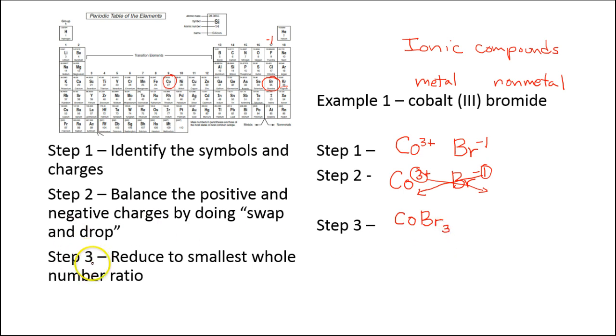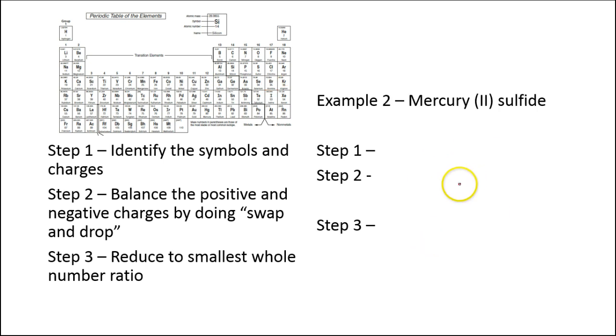And then our third step is to reduce to smallest whole number ratio. And so this is already reduced. So we just leave it as is. This is the final formula for this compound. Now let's do another name here. Here we have mercury sulfide. So again, I have ionic compound. I have metal and non-metal.